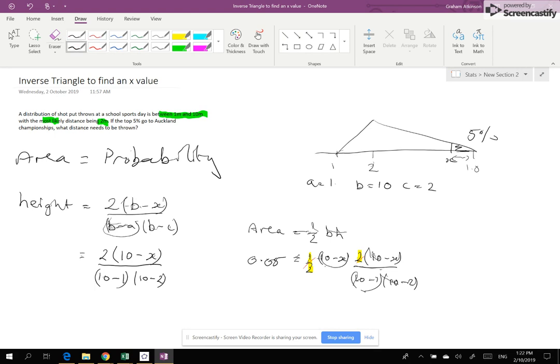On the top, I've got 10 minus X times 10 minus X. That's going to give me a quadratic. So I know where I'm heading with this. And on the bottom, I've got 2 numbers, which is 9 times 8.